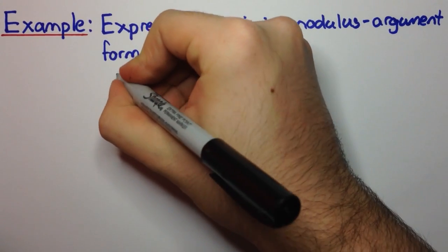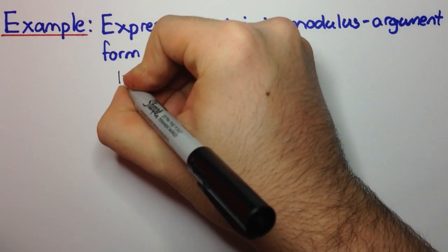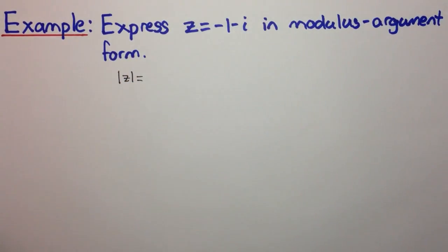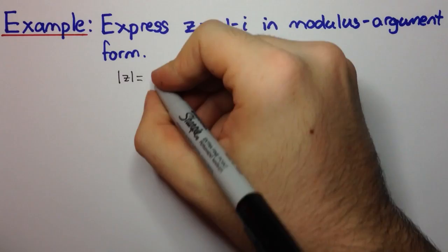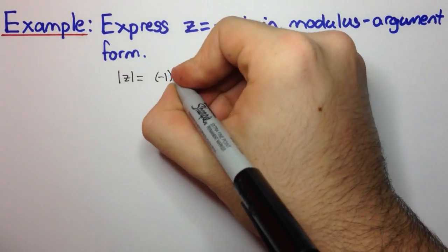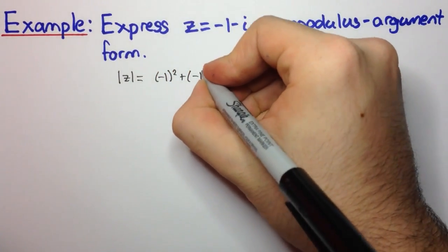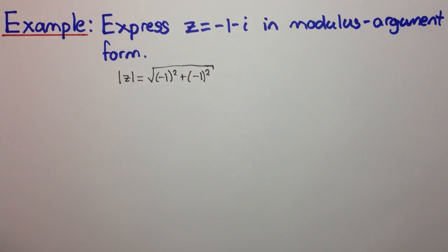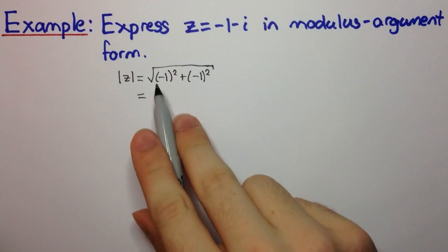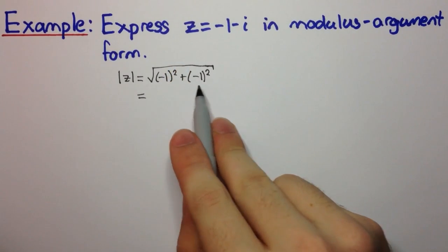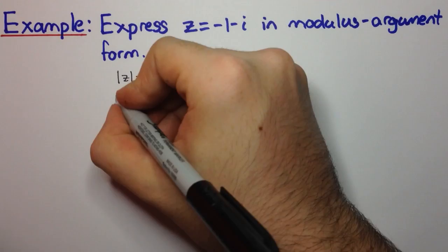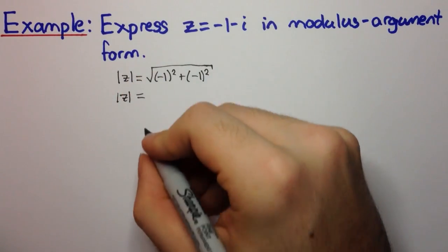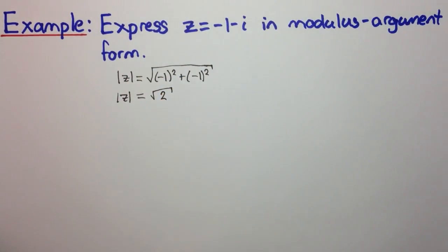So if we get the modulus, that's the square of the real part plus the square of the imaginary part, and we take the square root. You should see that this is going to be 1 plus 1, which is 2, and so the modulus of z is equal to root 2.